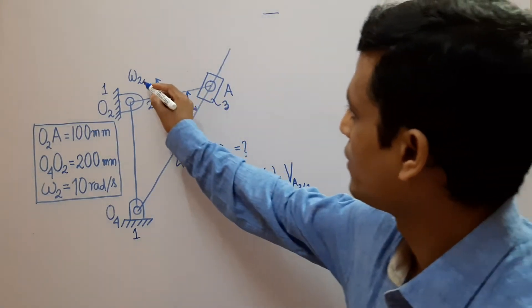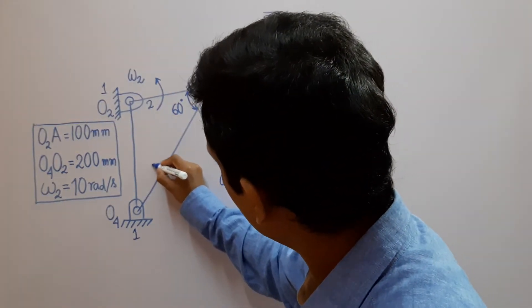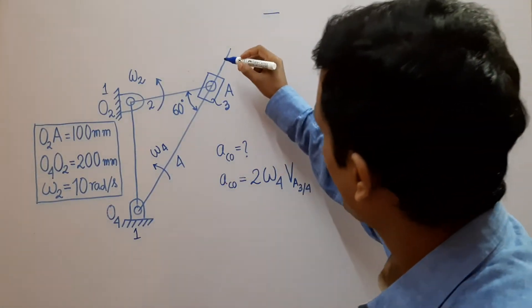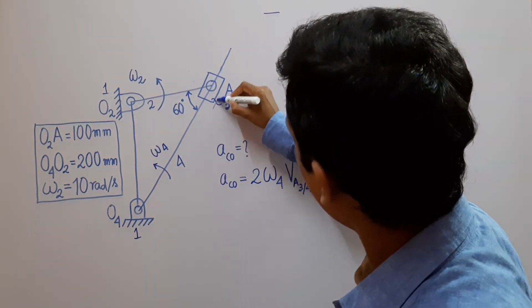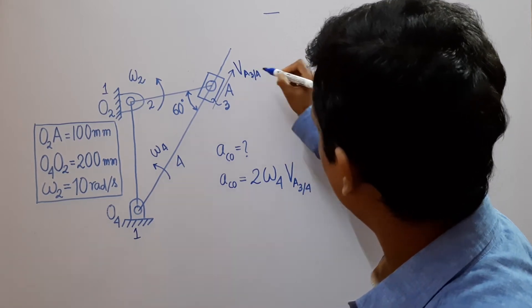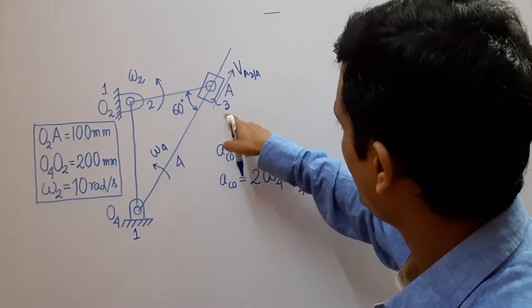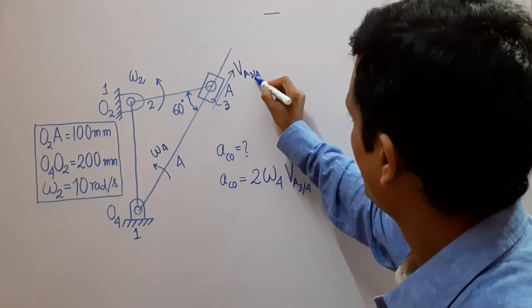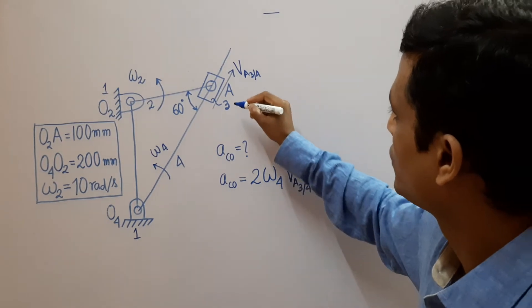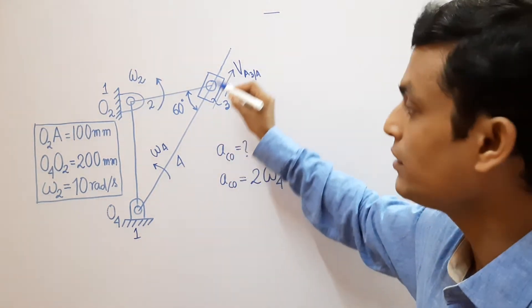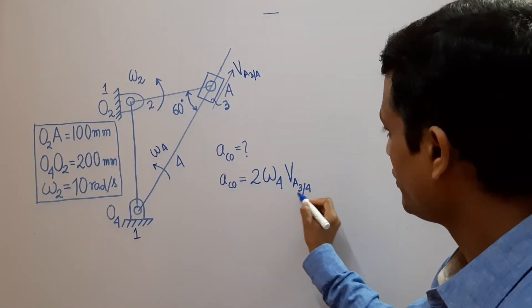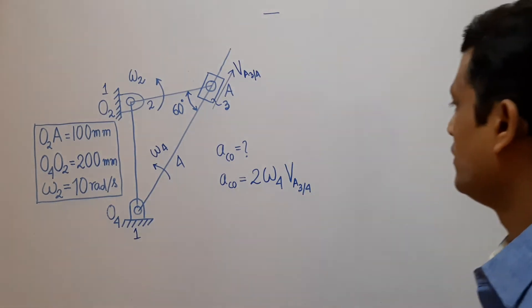We already know omega 2, so we have to find out omega 4, the angular velocity of link 4, and we also have to determine VA3/4, that is the sliding velocity of link 3 with respect to 4 at point A. These two parameters — omega 4 and VA3/4 — are what we need to determine.